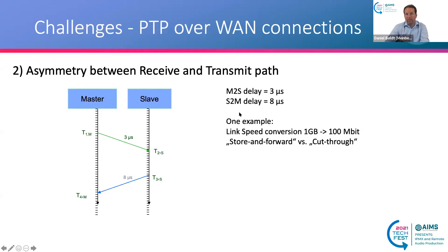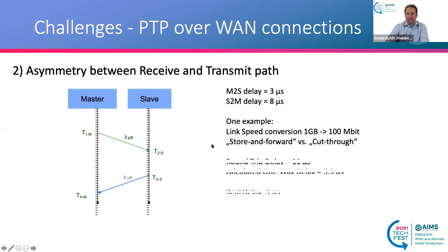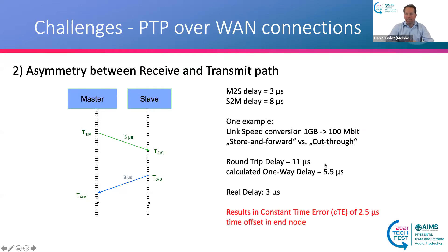This asymmetry can be caused by a link speed conversion. If you have a 1 gigabit switch with a 100 megabit port also in the chain, the store-and-forward mechanism versus cut-through within that equipment leads to asymmetrical delays. The total round-trip delay would be 11 microseconds, and the slave will calculate a one-way delay of 5.5 microseconds, but the real delay is actually 3 microseconds — resulting in a constant time error of 2.5 microseconds that you can directly measure in the time offset of the end node.